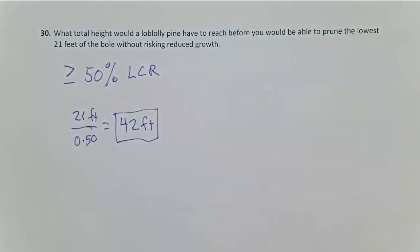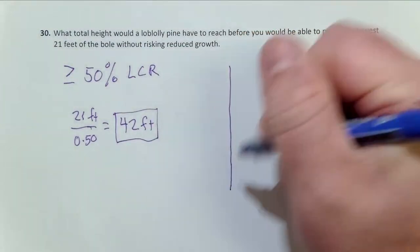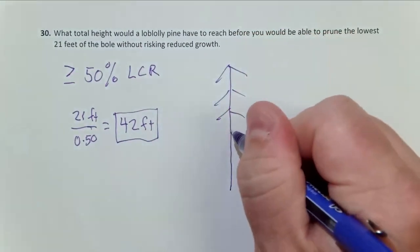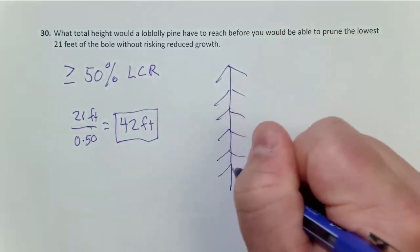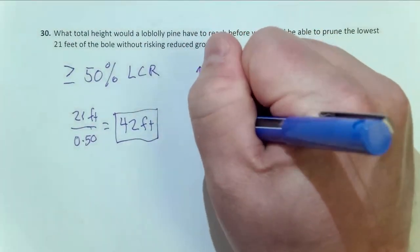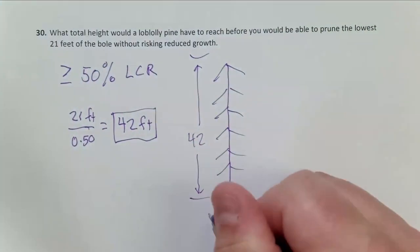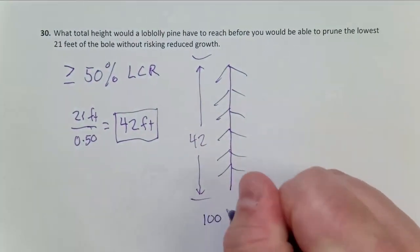So if we look at this, if our trees are 42 feet tall, so here's my attempt to draw a tree for what it's worth, 42 feet tall. We're assuming 100% live crown ratio to start. That's an assumption we're making.